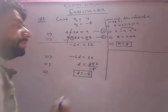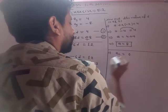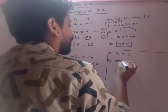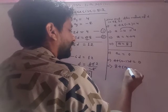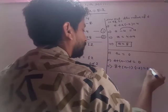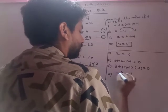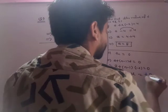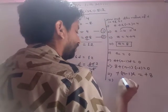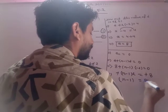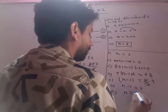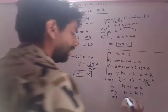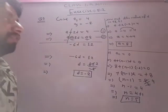Now find which term of the AP is 0. Set the nth term equal to 0: a plus (n minus 1) into d equals 0. Substituting a equals 8 and d equals minus 2: 8 plus (n minus 1)(minus 2) equals 0. Solving: n minus 1 equals 4, so n equals 5.